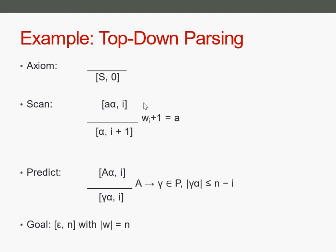Then we have the scan rule, and here you see again our notation for Greek symbols. Alpha here means it can be any arbitrary string consisting of terminals and non-terminals from our grammar. For the scan rule, at the beginning we need to have a terminal symbol, and this terminal must be the same as the next terminal symbol in our input string. So w is the word or the input string we want to parse — in this example it would be AABB. If the first symbol on our stack is a terminal which matches the next symbol of our input string, then we can remove the terminal symbol from the stack and increase the counter by one.